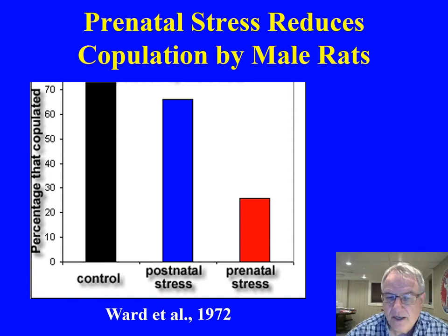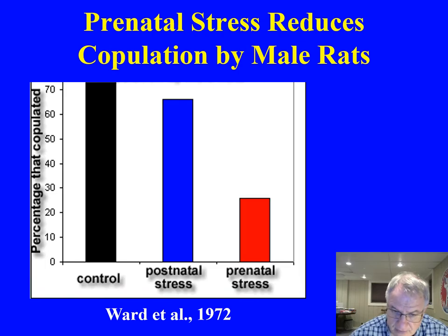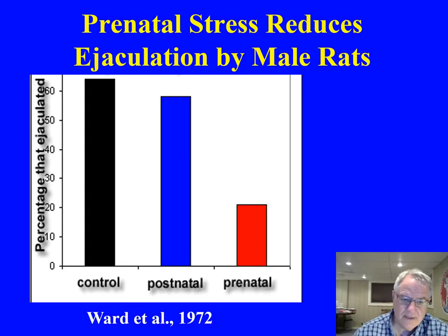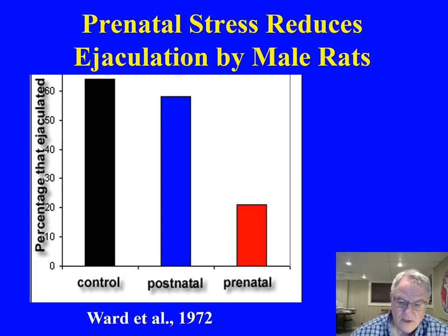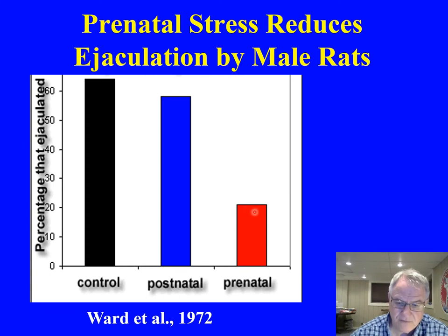We get a substantial reduction in the sexual behavior of these males — many fewer are exhibiting copulatory behavior. Looking at the percentage of prenatally stressed males that actually ejaculated with a female, we can see a very low percentage, whereas the control condition is pretty high — a highly significant difference.